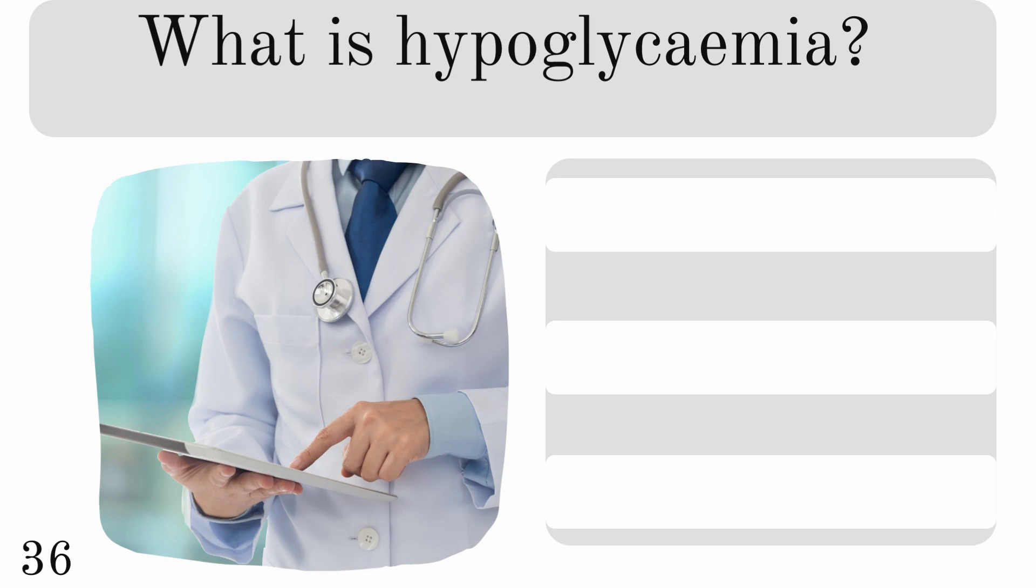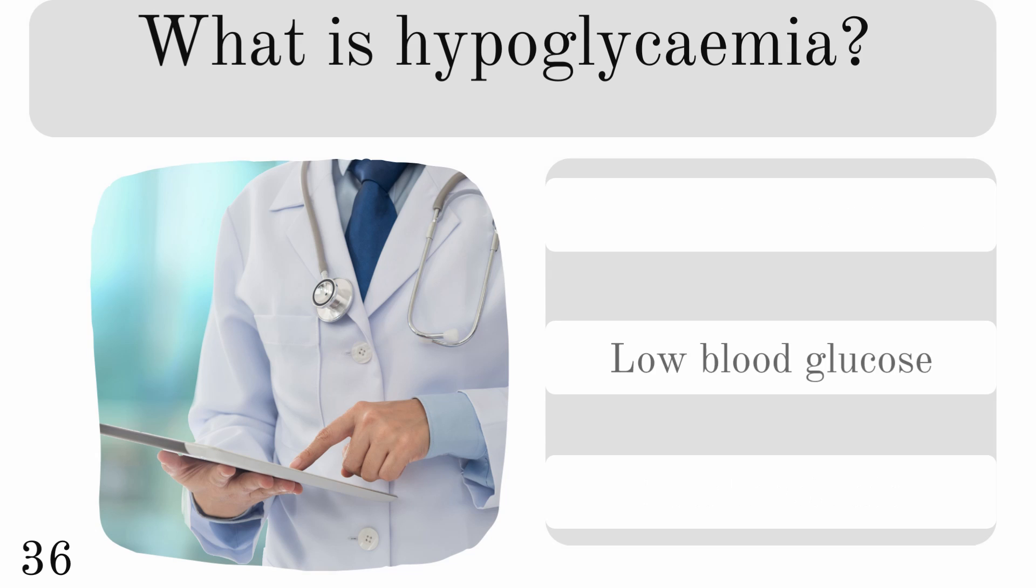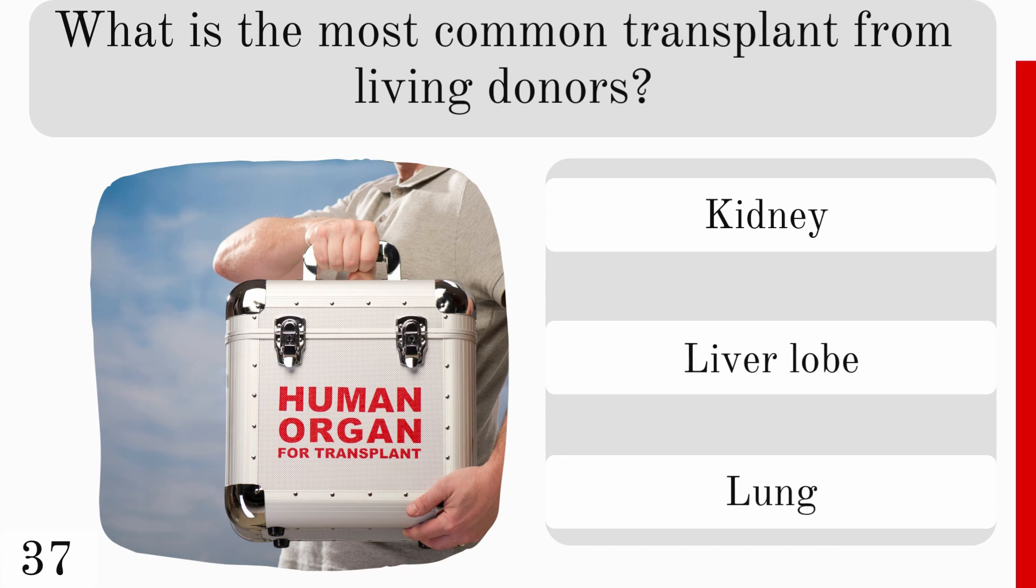What is hypoglycemia? Low blood pressure, low blood glucose, or low heart rate? And it is low blood glucose. What is the most common transplant from living donors? Kidney, liver lobe, or lung? And it is kidney.